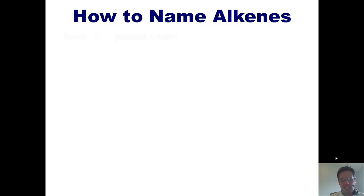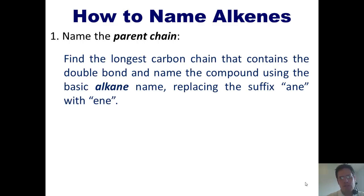First of all, I want to teach you how to name alkenes. Step one, name the parent chain. How do we name the parent chain? Well, we find the longest carbon chain that contains a double bond, and then we name the compound using its basic alkane names, such as methane, ethane, propane, butane, etc. But we replace the suffix '-ane' with the suffix '-ene'.